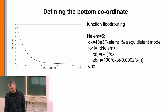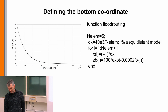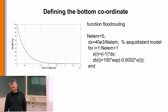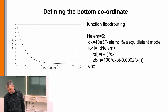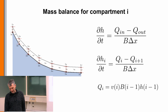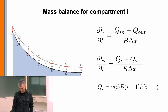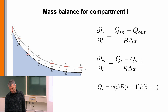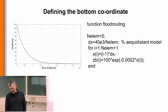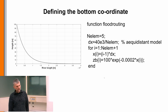Then we define the bed. In this simplest version of the code I use an equidistant model. We have a stretch of 40 kilometers to simulate, divided into five elements, so dx is 40 km divided by 5, which is 8 km per element. Then I define x at the boundaries of the compartments — we have one more x-value than compartments, so the loop runs from i=1 to n_element+1, with x(i) = (i-1) * dx.